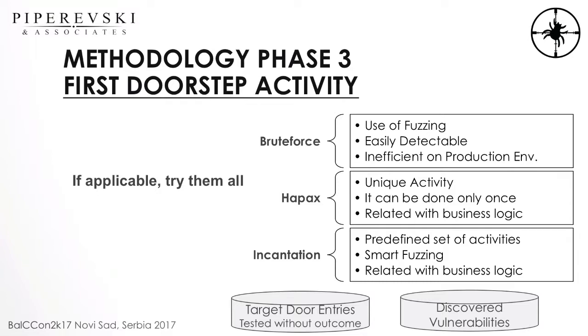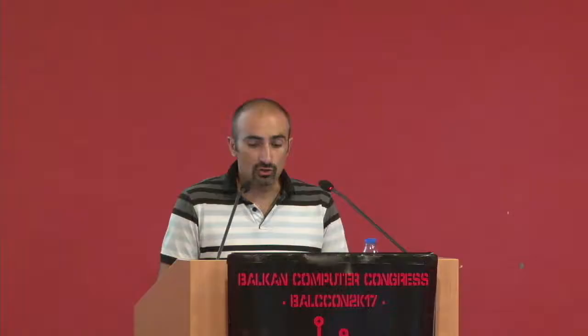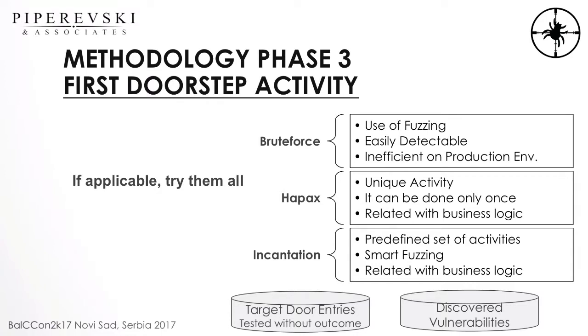Smart fuzzing is also here. Smart fuzzing can be done with a lot of tools — you can use automated tools, or for web applications you can use scripts in ZAAP (ZAP - OWASP ZAP proxy). ZAP is a really good proxy tool from the Open Web Application Security Project, widely used by hackers and vulnerability researchers. From phase three, we build two databases: one for discovered vulnerabilities, and another for targets of interest tested without outcome — where nothing happened and there was no finding.